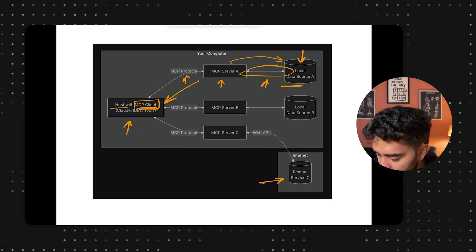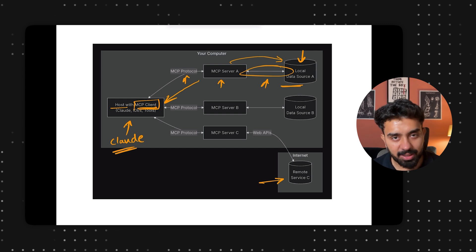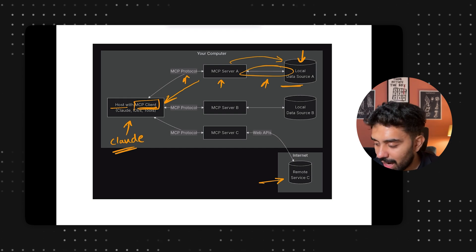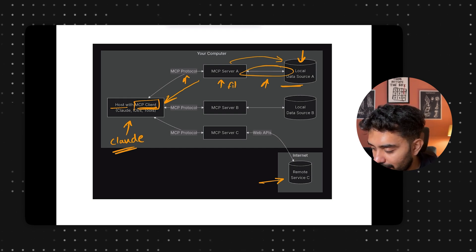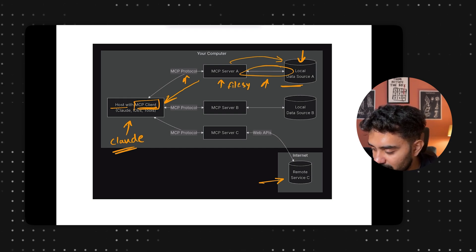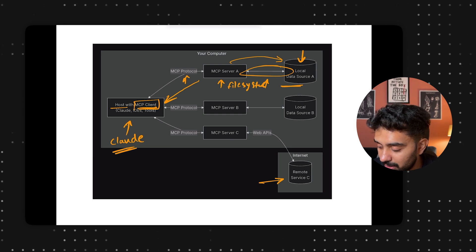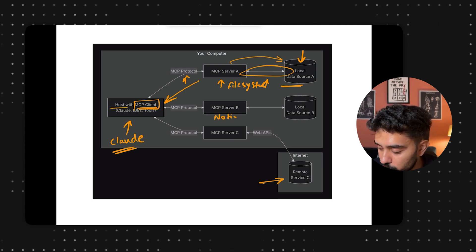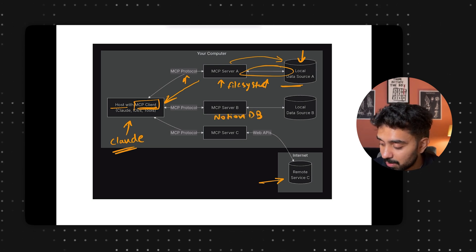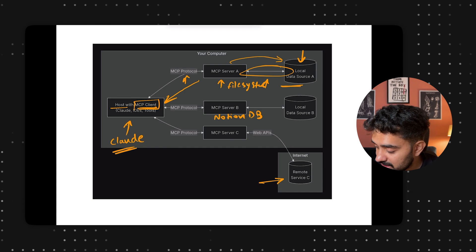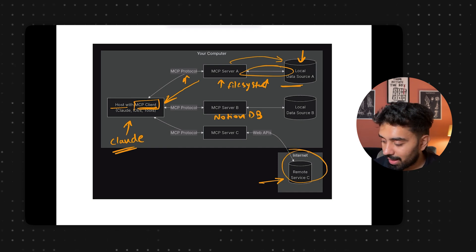You can think of the host as the Claude application. MCP Server A could be a server to access your file system. MCP Server B could be your Notion database. MCP Server C could interact with the internet.